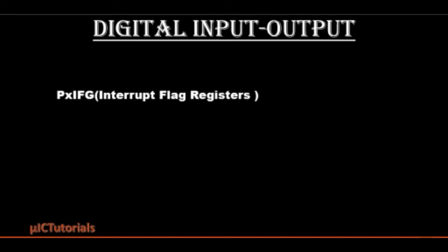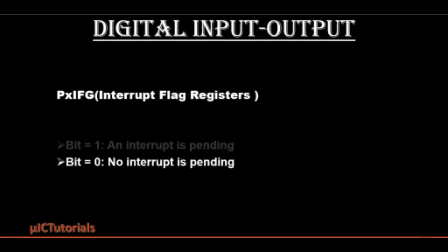The PXIFG register holds the interrupt flag for the corresponding input-output pin. The interrupt flag is set when the selected input signal edge occurs at the pin. All PXIFG interrupt flags request an interrupt when their corresponding interrupt enable bit and the global interrupt bit are set. If the bit is high, it indicates an interrupt is not pending; if the bit is low, it indicates an interrupt is pending.